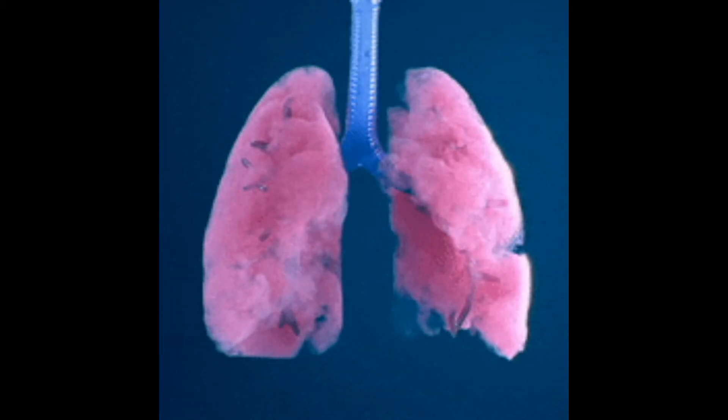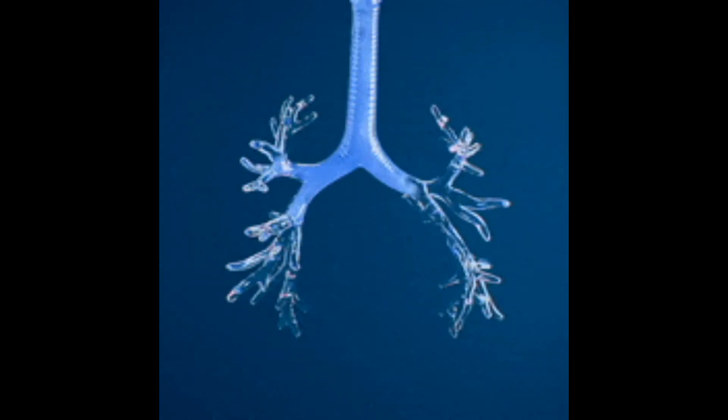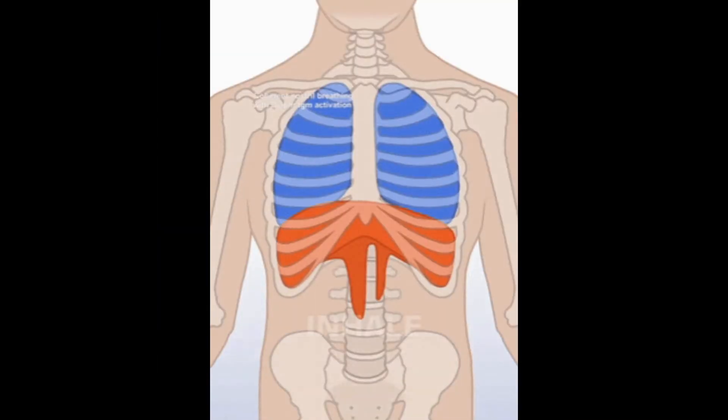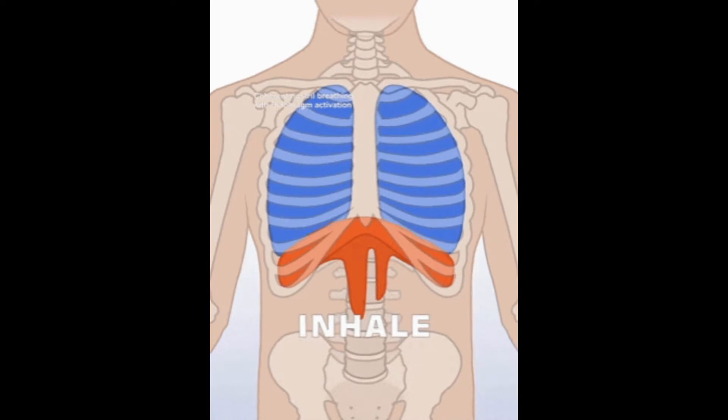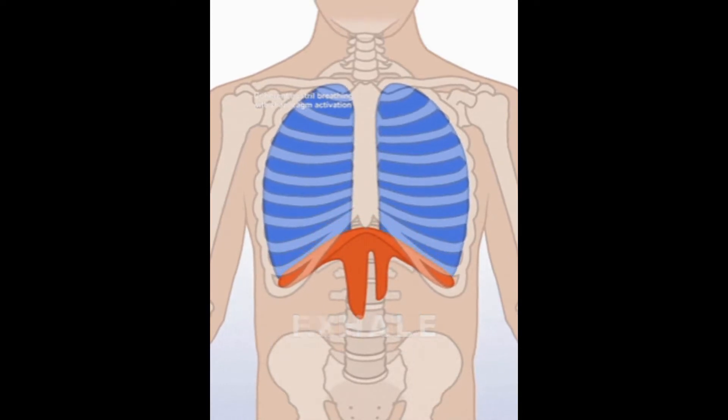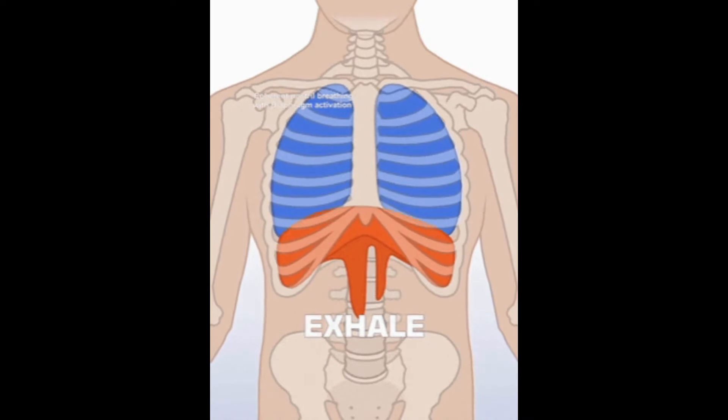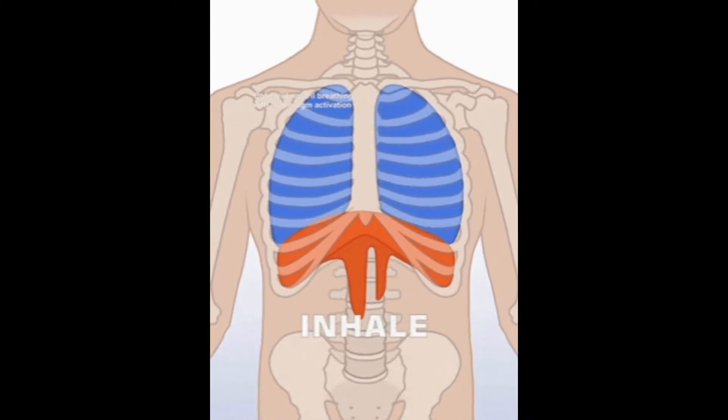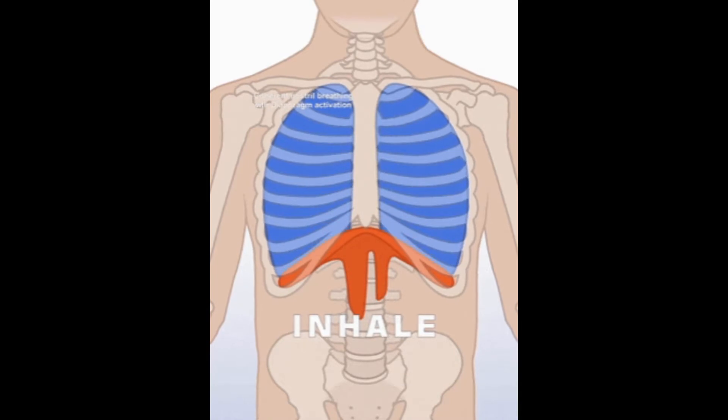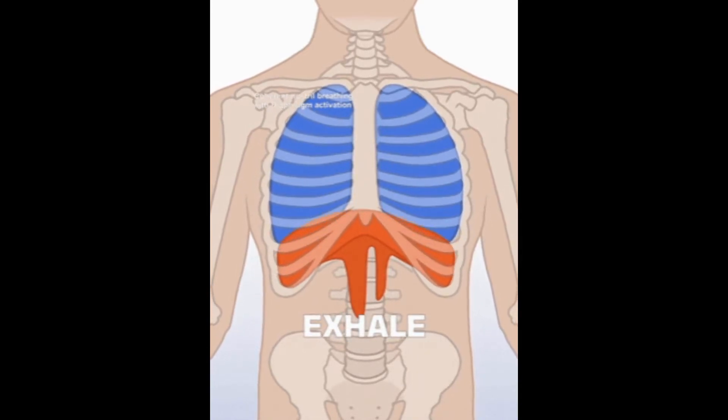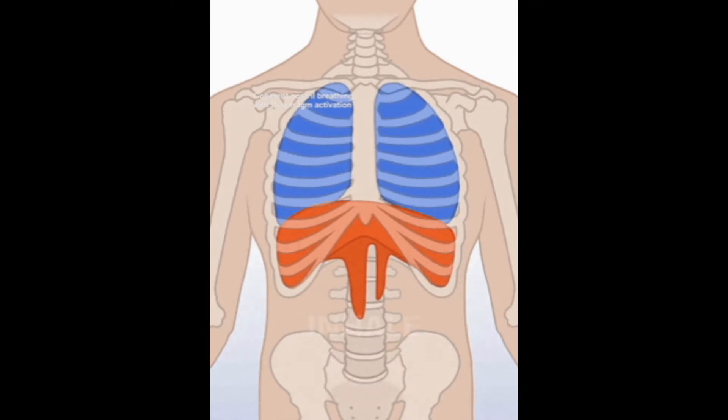The first two centers, the dorsal respiratory group and ventral respiratory group, are influenced by stretch receptors and chemoreceptors. The dorsal respiratory group of neurons are located in the dorsal portion of the medulla oblongata. This group of neurons mainly causes inspiration.